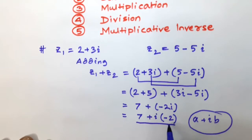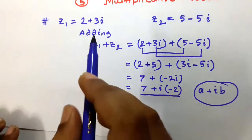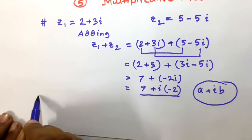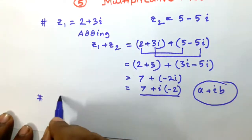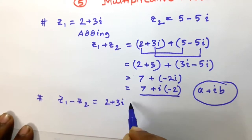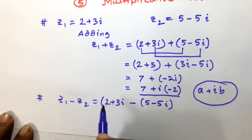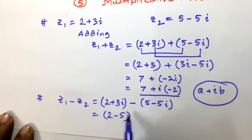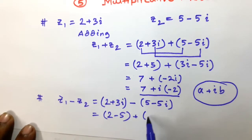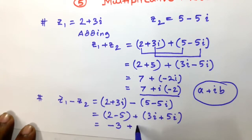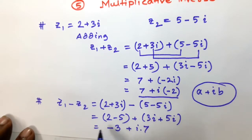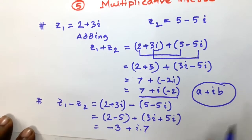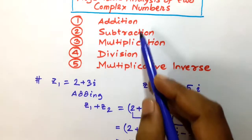Similarly, if we subtract z2 from z1, we find 2 plus 3i minus (5 minus 5i). The real parts are subtracted from each other and the imaginary parts also. So 2 minus 5 plus 3i minus of minus 5i gives us minus 3 plus 7i. Again, this is of the form a plus ib, where a equals negative 3 and b equals positive 7. So we have learned addition and subtraction.